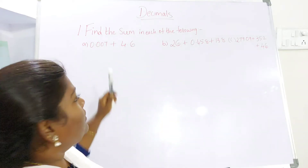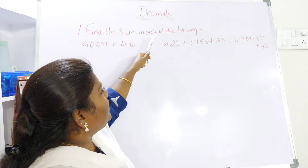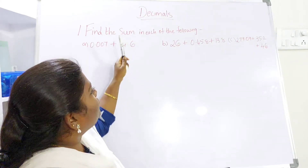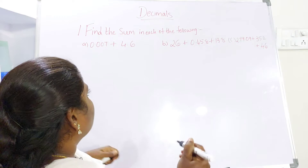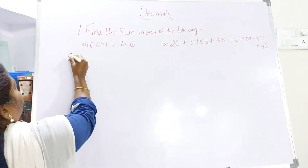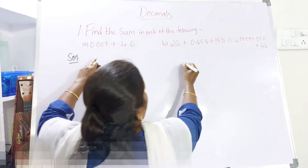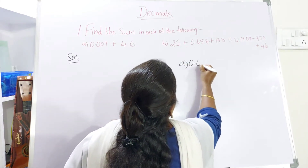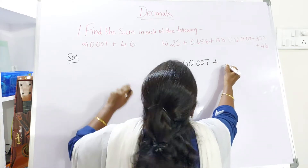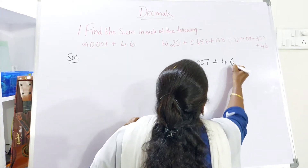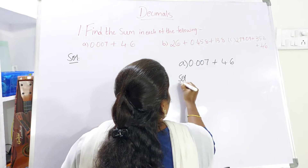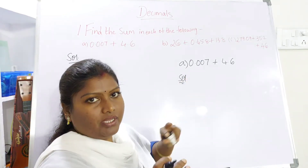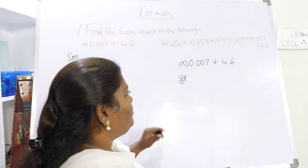I have taken a problem: find the sum in each of the following. Now here there are two decimal fractions and we need to find the sum. Now the first one is 0.007 plus 4.6. When you are doing addition, the place value should be taken into consideration and we have to place accordingly.